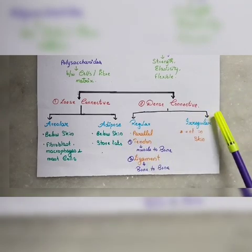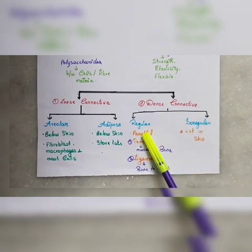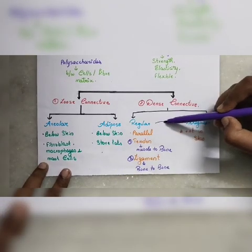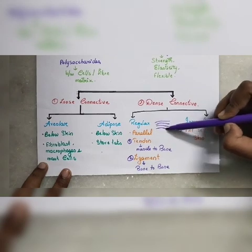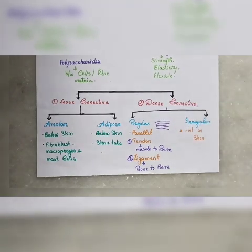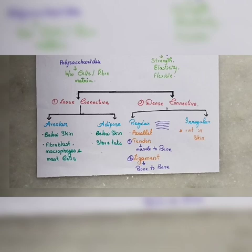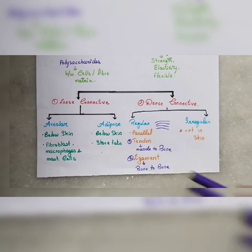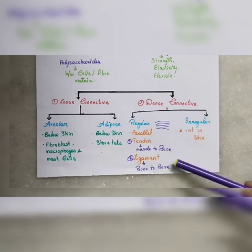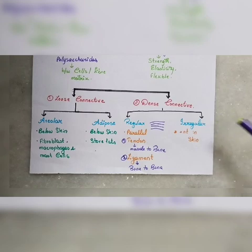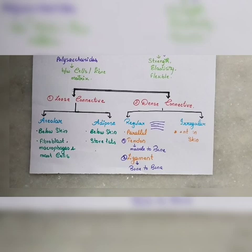Next is dense connective tissue, divided into two types: regular and irregular. In regular dense connective tissue, fibers are arranged in parallel lines. There are two examples: tendon, which connects muscle to bone, and ligament, which connects bone to bone. Irregular dense connective tissue has fibers arranged in a discontinuous manner in multiple directions.